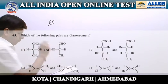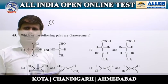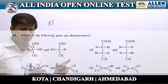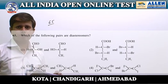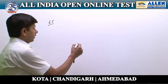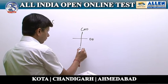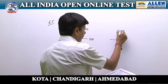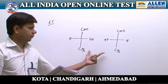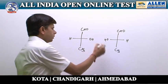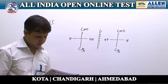Question 65: which of the following pairs is a pair of diastereomers? Diastereomers are two stereoisomers which are not mirror images of each other. In the first option, the given compounds are mirror images of each other, so this pair cannot be a pair of diastereomers.